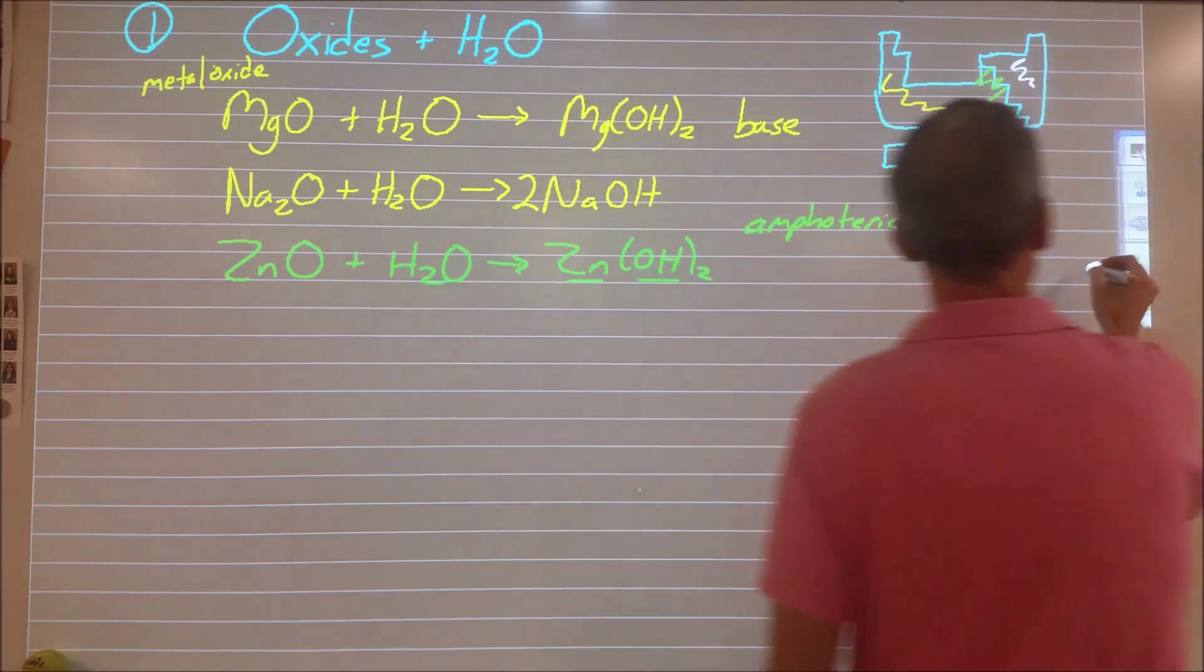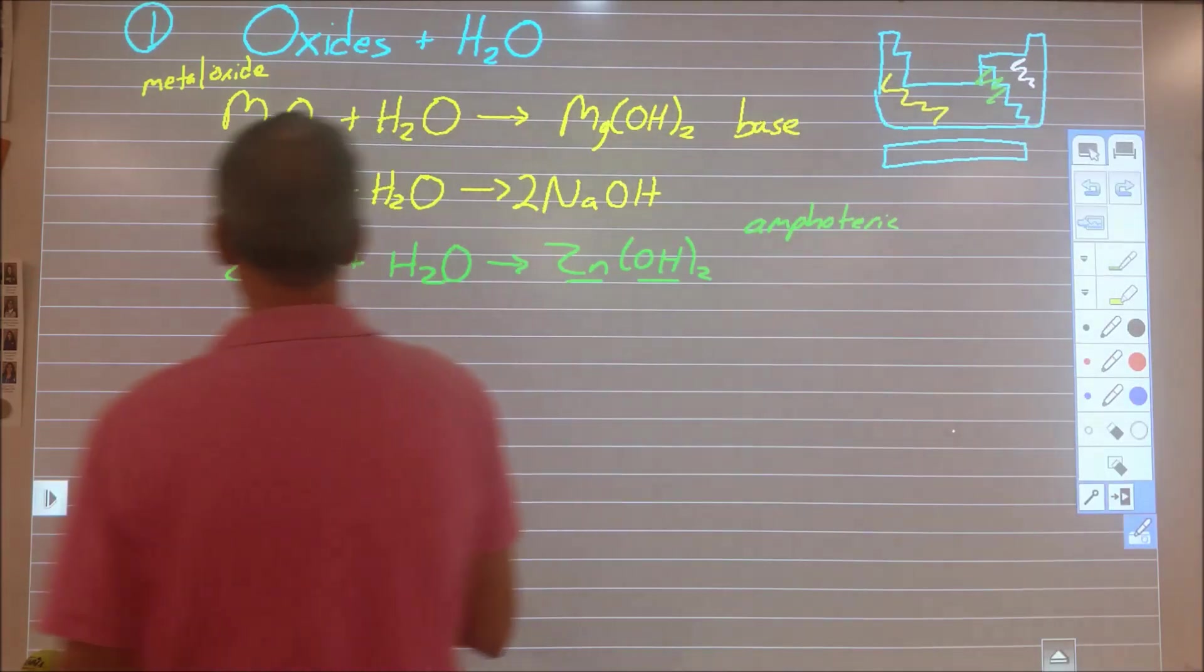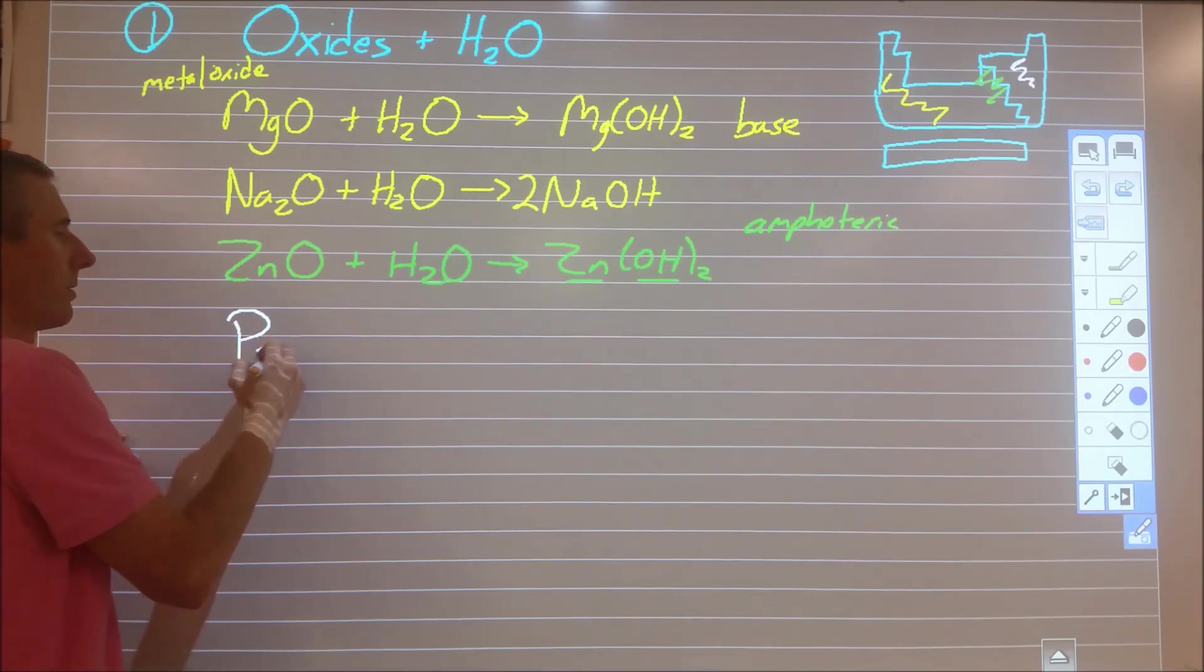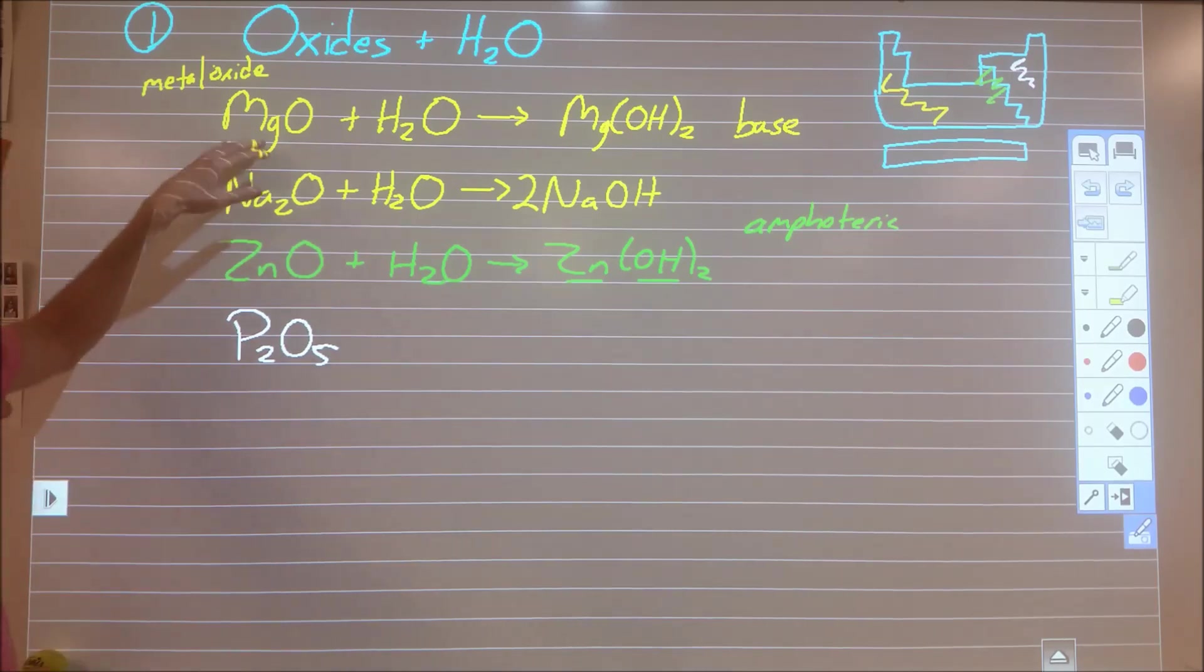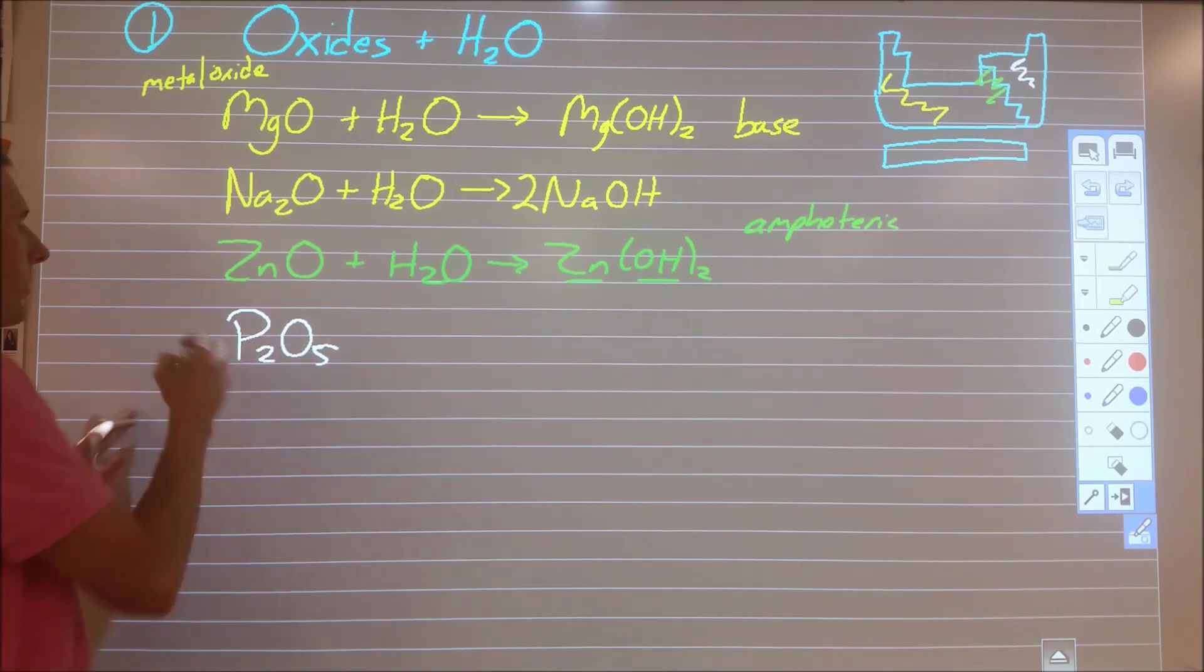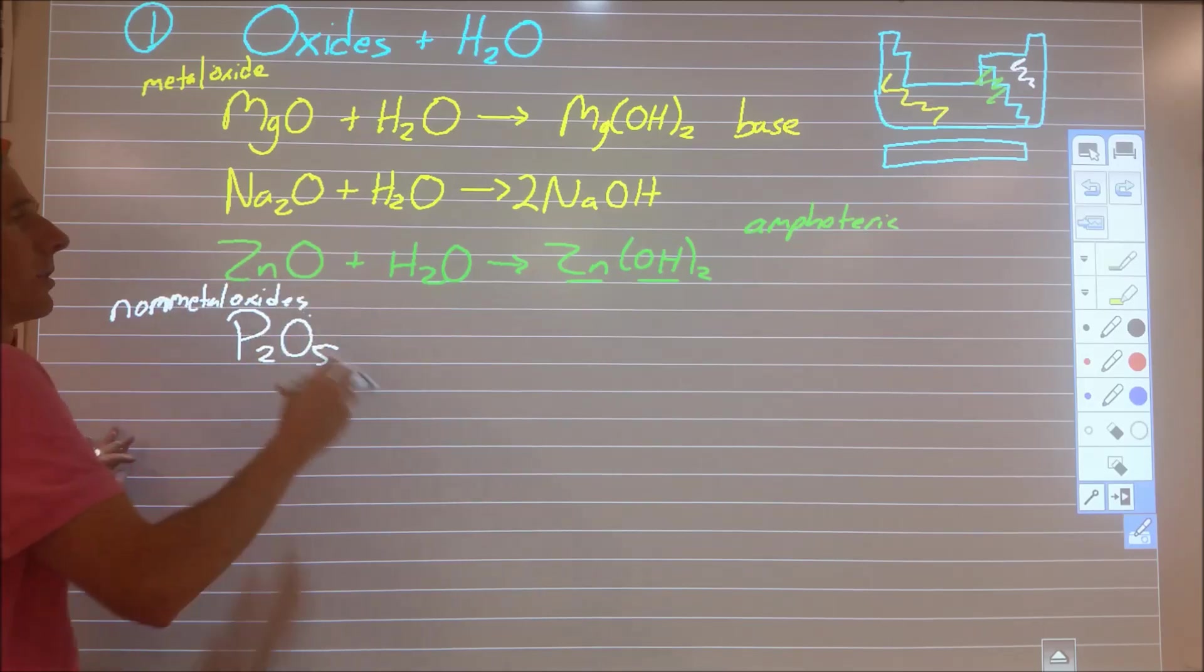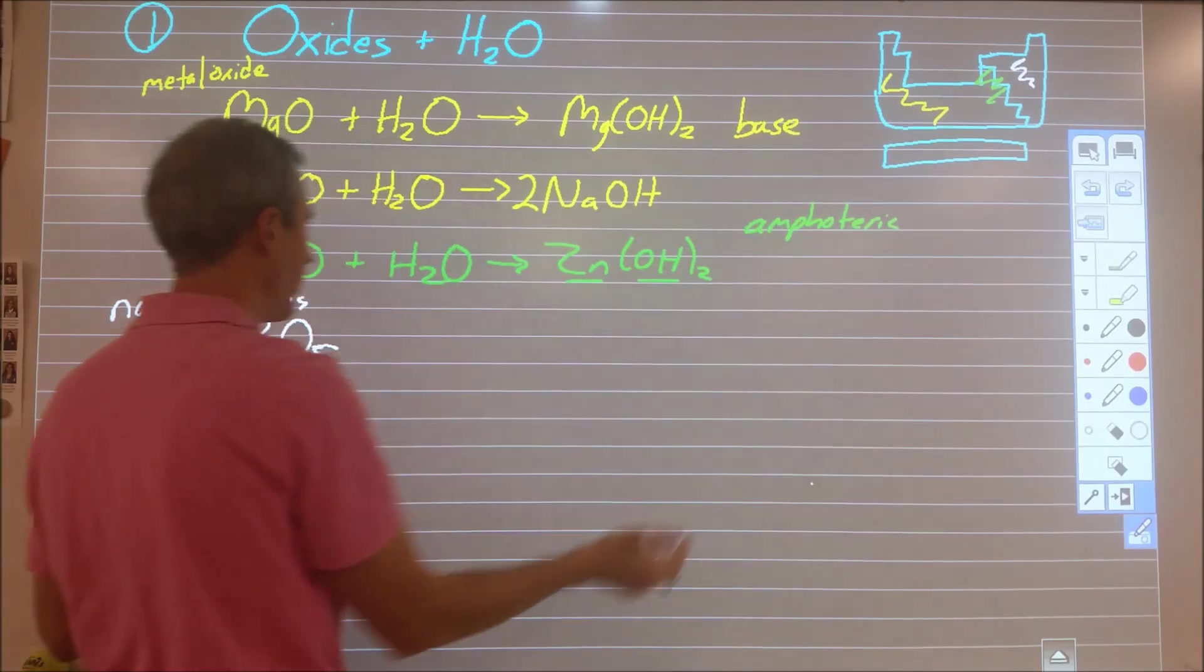As we continue progressing across the periodic table, now we start to get into things where we're dealing with non-metal oxides. So if you've kind of missed this up until this point, metallic oxide, we have a metal plus oxygen, a non-metallic oxide, we have a non-metal plus oxygen. So the trend is going that we're going from basic to neutral, now we're going to get into the acidic part.